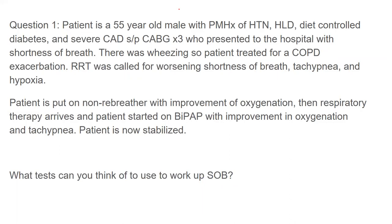VBGs are actually pretty sensitive for hypercapnia — if the CO2 on a VBG is normal, you're pretty sure the patient isn't hypercapnic. But if someone is hypercapnic, it doesn't tell you the level that well. The pH and CO2 are both a little more acidotic on a VBG than an ABG. In this situation with a hypoxic patient, you should probably go with an ABG. The ABG is a snapshot in time — try to stabilize first.